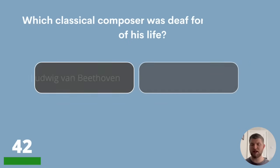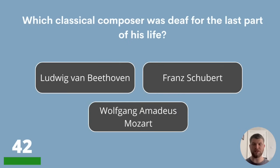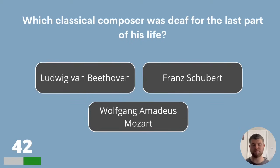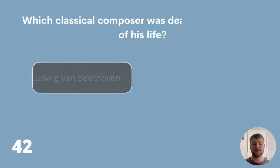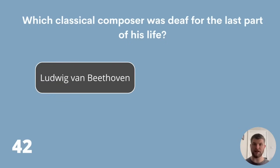Question 42. Which classical composer was deaf for the last part of his life? Ludwig van Beethoven, Franz Schubert or Wolfgang Amadeus Mozart? The correct answer is Ludwig van Beethoven.